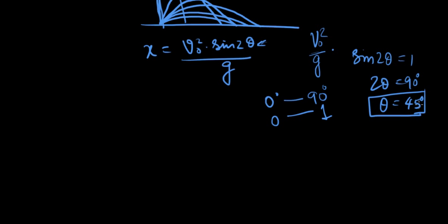This is a very common sense way to determine what theta can be for maximum distance. For example, if theta is anything less — 20, 30, 40 — 2 theta would be 80, and sine of that would be less than 1, so we're not going to achieve maximum range. This is the simple way. When you go to university physics, they ask you to derive the value of theta using calculus.